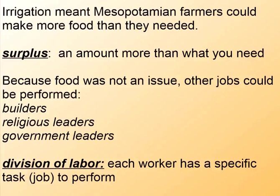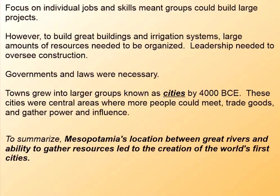Because food wasn't an issue, the Mesopotamians could focus on other jobs, like builders and religious and government leaders. They were able to split up people's work based on what they could do better — this is a division of labor, where every worker has a specific task to perform. Because they could focus on individual jobs and skills, groups could build larger projects. But building larger structures, irrigation systems, and projects required a lot of resources, leadership to oversee construction, governments, and laws.